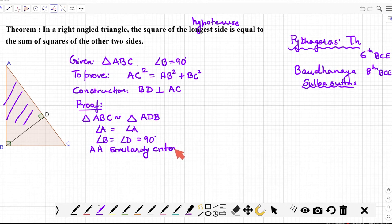By this criterion we can very well say that the two triangles are similar. Now the moment these two triangles are similar, what do we conclude? We can conclude that the sides will be proportional.